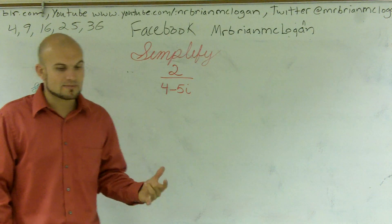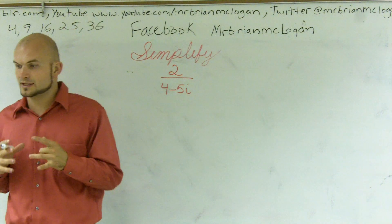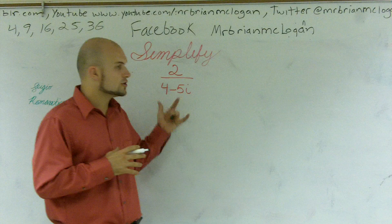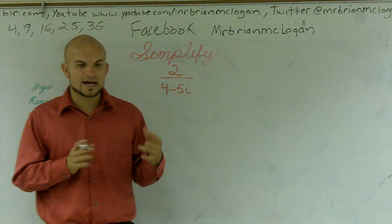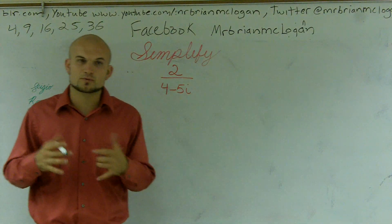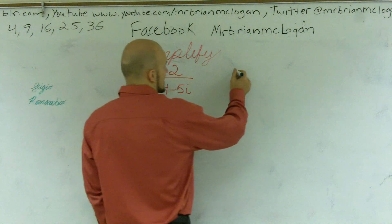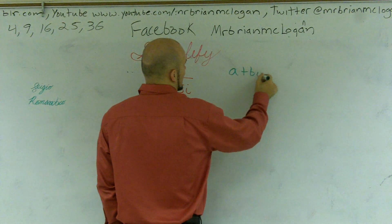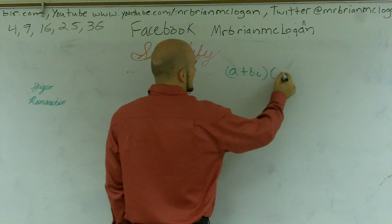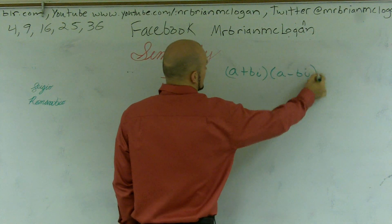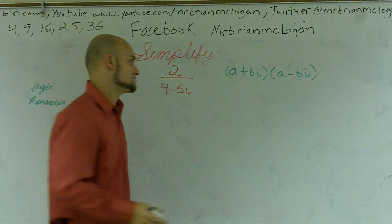So one thing we need to remember when dealing with complex numbers is we have what we call conjugate pairs. What I mean by that is a plus bi, the conjugate pair of that is a minus bi.